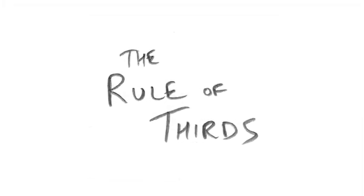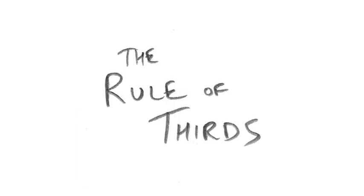The rule of thirds is a quick guideline for composing objects and people within the frame. Here's how it works. If you imagine your frame divided into thirds both vertically and horizontally, those lines can be used to compose your shot. You can place any critical elements along these lines or on the intersection points themselves. This is called composing on the thirds.